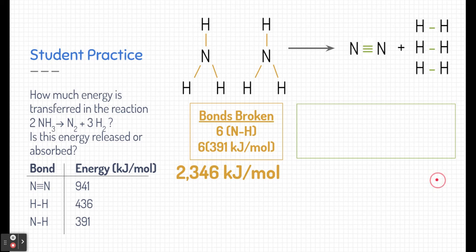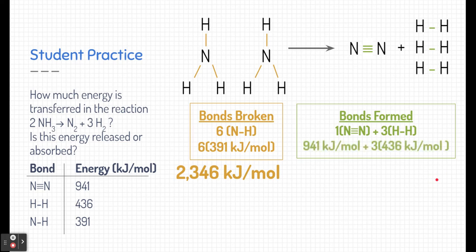Now let's take a look at the products, the bonds formed. I see that there is one triple bond between two nitrogens and three single bonds between the hydrogens. So I'm going to add up all of these bond energies. Remember, these are energies that are released by this chemical reaction.